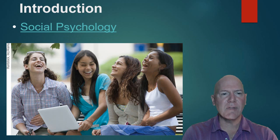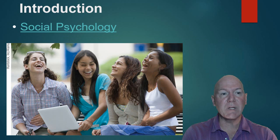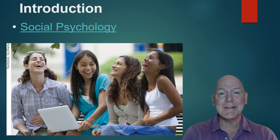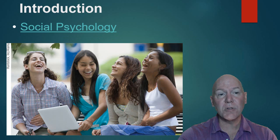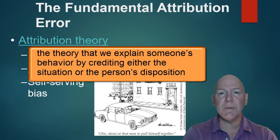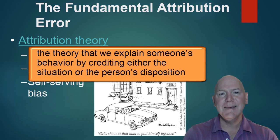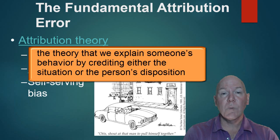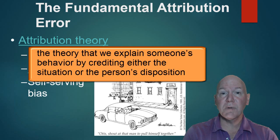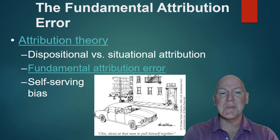Social psychology covers many exciting things like your influence in a situation, how racism happens, liking and loving, and all those kinds of things. We first look at attribution — when you attribute something, we're giving a root cause to it. So when someone has a certain kind of behavior, we will attribute that behavior to something.